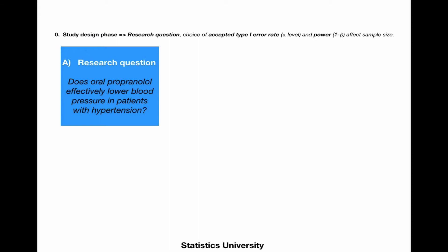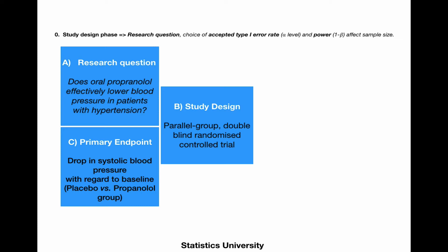Here's an example. Let's say we want to know whether oral propranolol effectively lowers blood pressure in patients with hypertension. We're going to randomize these patients. So, we're going to perform an RCT. We're going to measure the drop in systolic blood pressure with regard to baseline, and compare the placebo with the propranolol group.